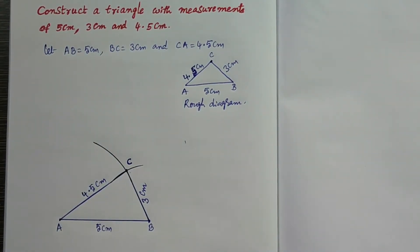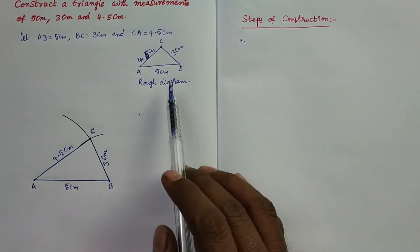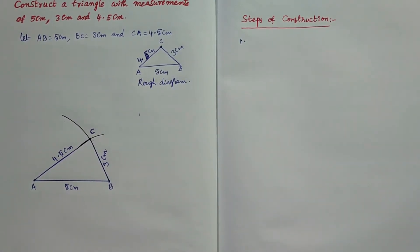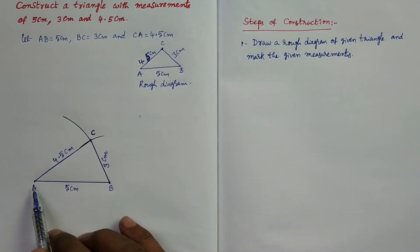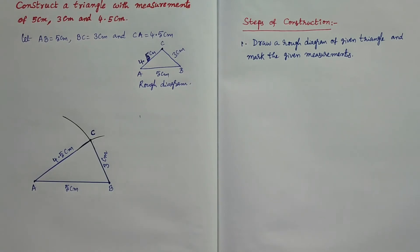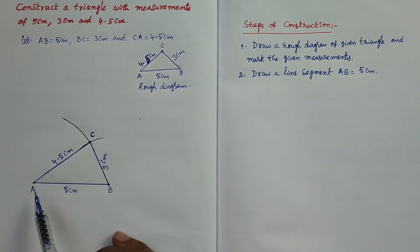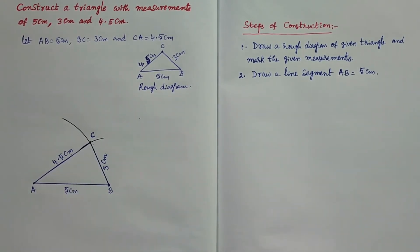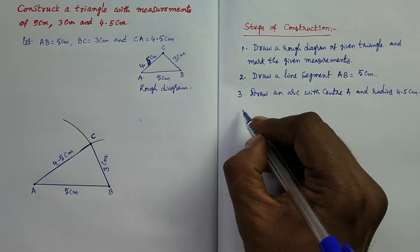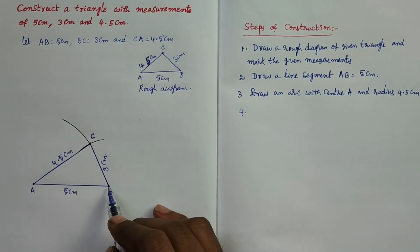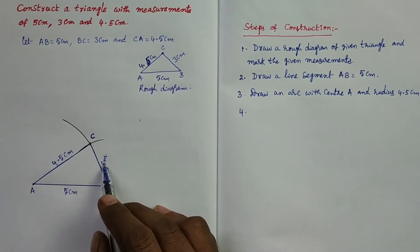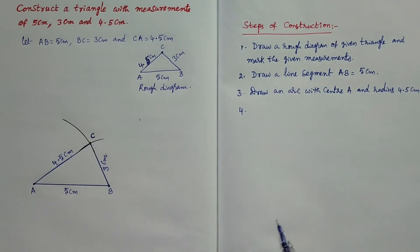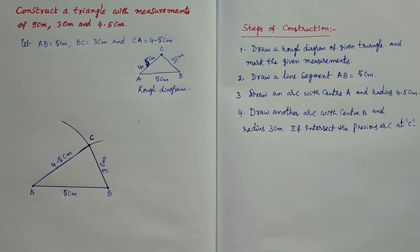Steps of construction: Step 1 — draw a rough diagram of the given triangle and mark the measurements. Step 2 — draw a line segment AB equal to 5 cm. Step 3 — draw an arc with center A and radius 4.5 cm. Step 4 — draw another arc with center B and radius 3 cm, which intersects the previous arc at C.